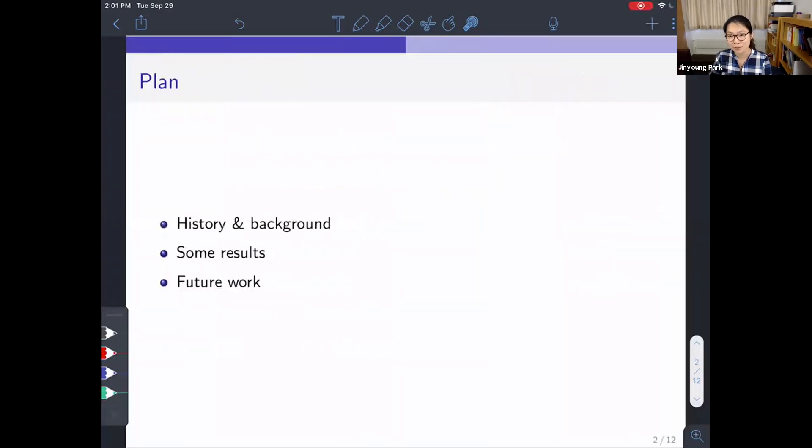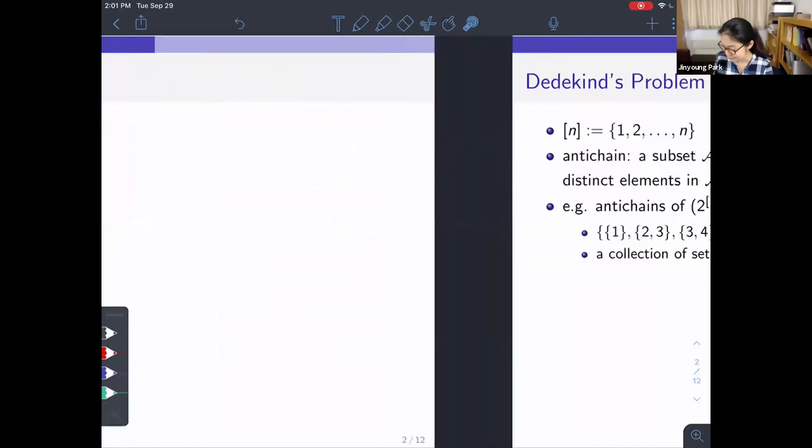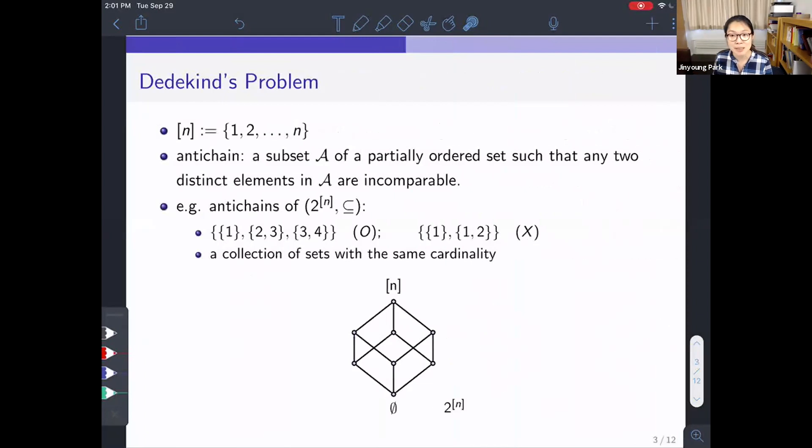This is my plan for today. First, I will talk about some histories or background of my work, and then I will state some of my results, and then I will talk about some questions that I am interested in. So this is the historical part. Let me introduce Dedekind's problem. Here we use n for the set 1 up to n. And an antichain is a subset A of a partially ordered set such that any two distinct elements in A are incomparable.